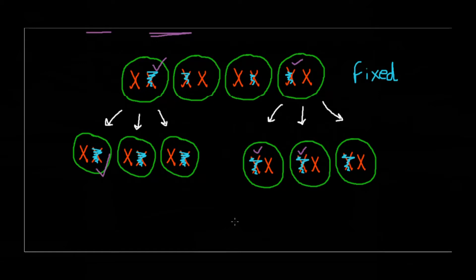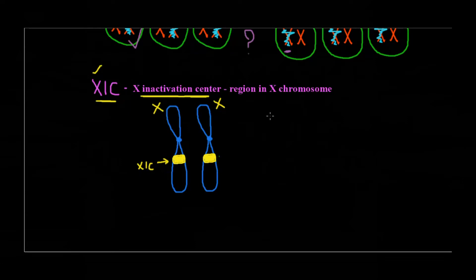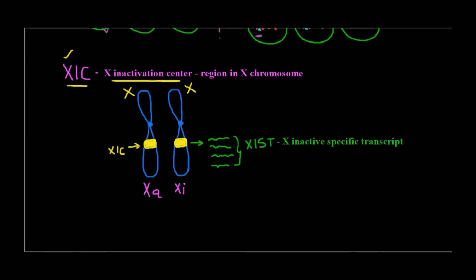Once it is done, it is going to stay and follow the same inactivation pattern. Now let us focus on what exactly is happening at this stage — the mechanism. In a normal female we have two active X chromosomes. Now there is a region in the X chromosome called XIC — that is, X Inactivation Center. This is very very important for X chromosome inactivation. As the name suggests, XIC is a region present in the X chromosome, so both X chromosomes would have this region.